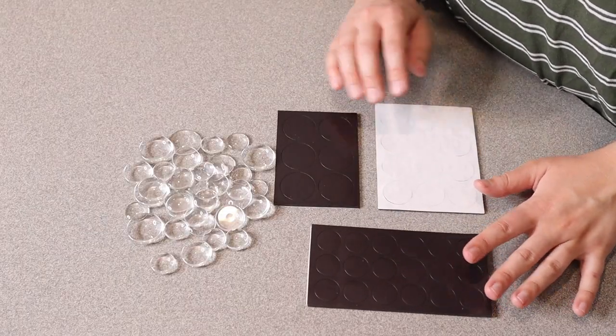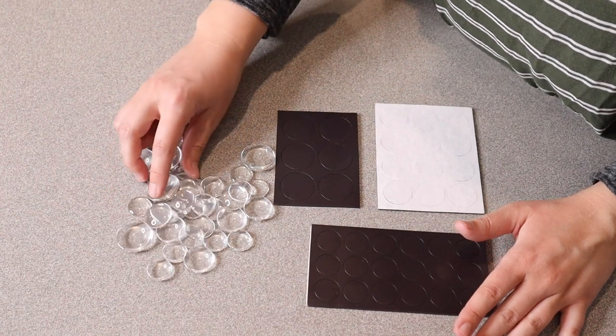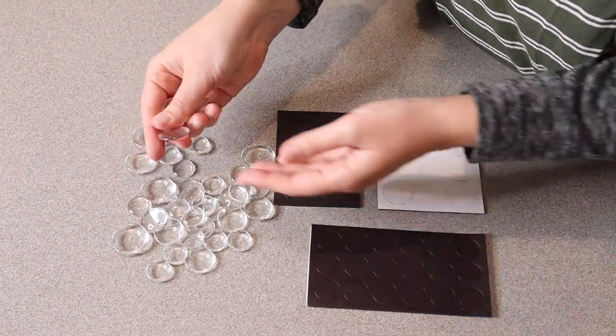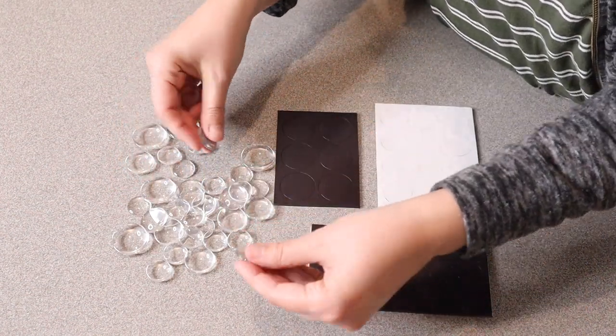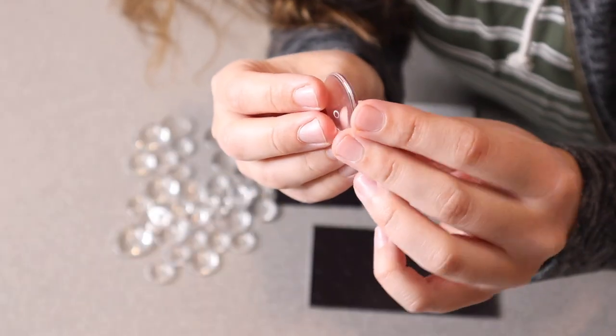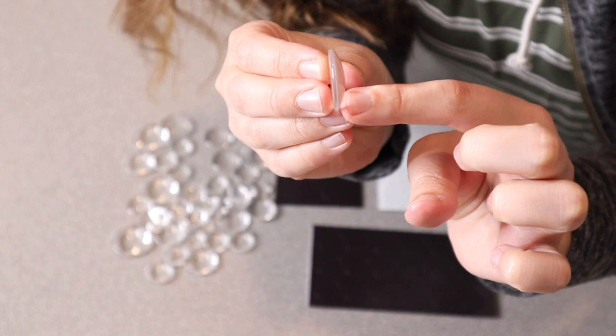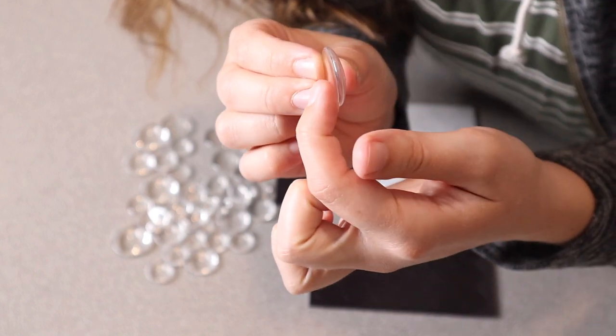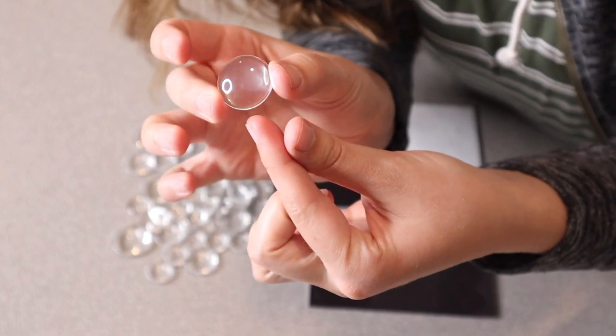This is everything that came inside the package. You can see we have all of these clear glass cabochons, I think is what you call them, but they're basically like a marble that's in half. So you can see this is what they look like. It's a little bit rounded on one side and then flat on the back and they're just clear just like that.